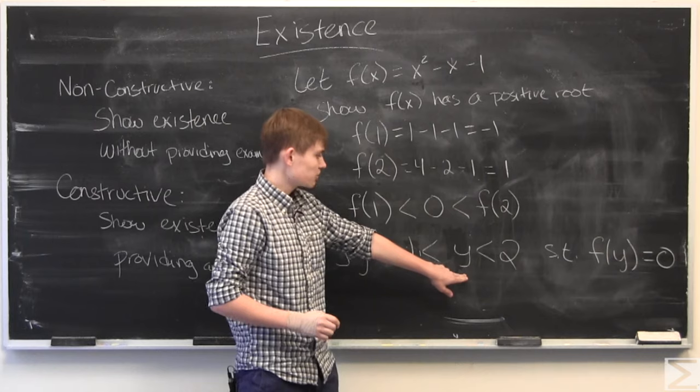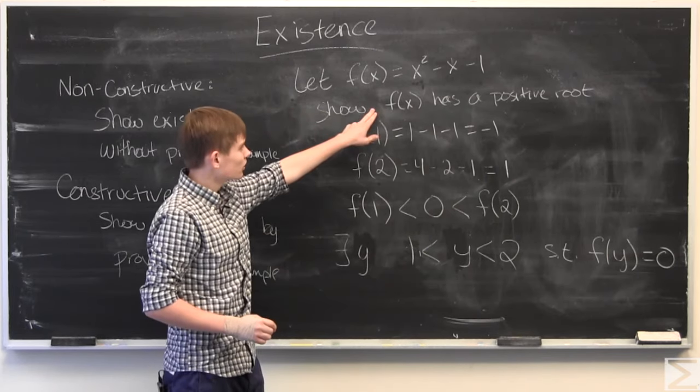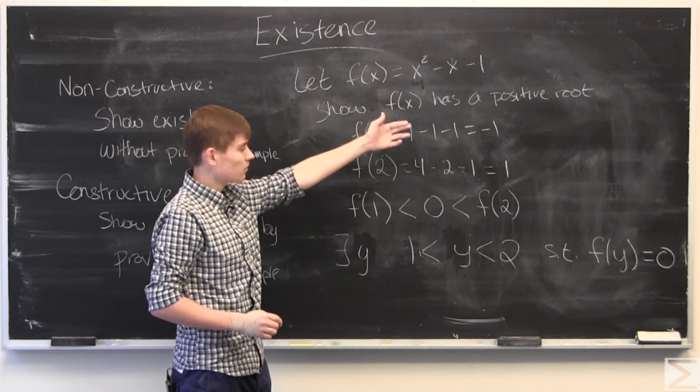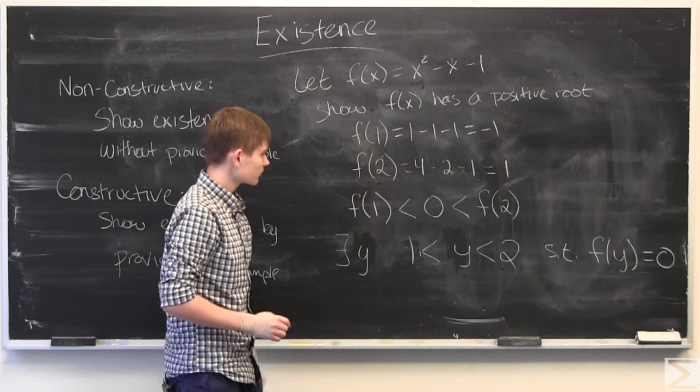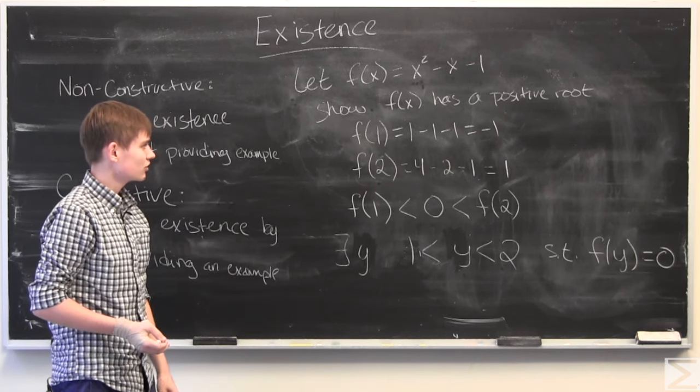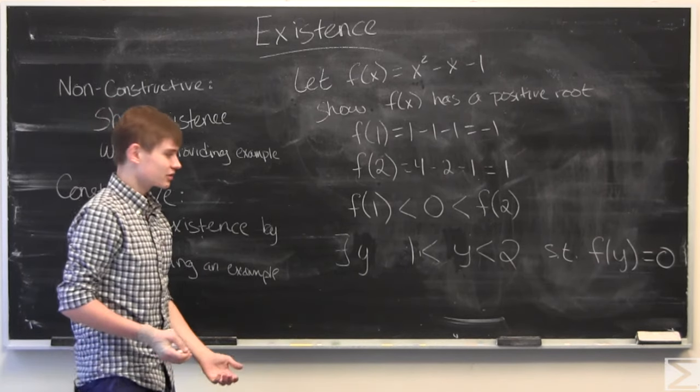Since y is positive, since it's between 1 and 2, we have shown that there exists a positive root for f(x). That is the non-constructive way to do it because we didn't necessarily find the positive root. We just showed that there exists one.